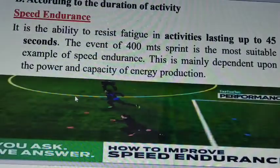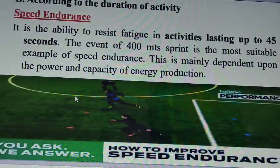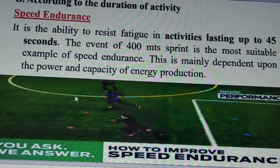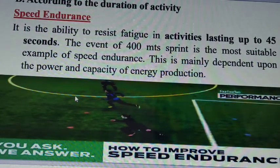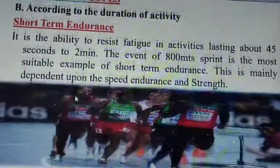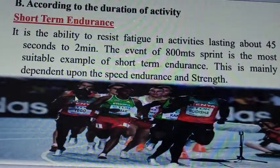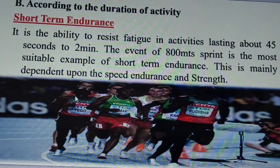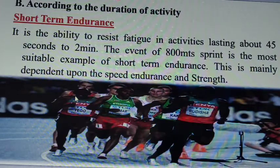Speed endurance, which is based on the duration of activity, is the ability to resist fatigue for activities lasting up to 45 seconds. The 400 meter sprint is the most suitable example of speed endurance. Short-term endurance is the ability to resist fatigue in activities lasting for about 45 seconds to 2 minutes — the 800 meter race is the best example.